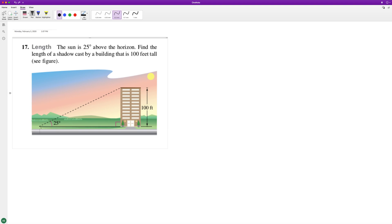How we solve this is we know the height of the building, and we just need to find the x length of the shadow. It's going to be the tangent of 25 degrees equals 100 over x. So we multiply by 100 on both sides and then divide through by tangent of 25 degrees.